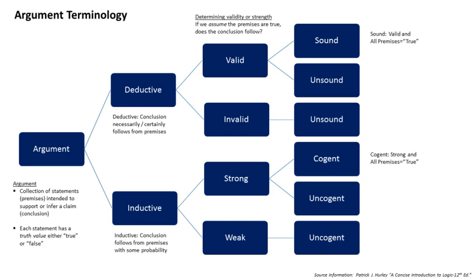Defeasible arguments are based on generalizations that hold only in the majority of cases, but are subject to exceptions and defaults. In order to represent and assess defeasible reasoning, it is necessary to combine the logical rules governing the acceptance of a conclusion based on the acceptance of its premises, with rules of material inference governing how a premise can support a given conclusion. Argumentation schemes have been developed to describe and assess the acceptability or fallaciousness of defeasible arguments. Argumentation schemes are stereotypical patterns of inference, combining semantic-ontological relations with types of reasoning and logical axioms, representing the abstract structure of the most common types of natural arguments. The argumentation schemes provided in Walton, Reed and McCagno (2008) describe tentatively the patterns of the most typical arguments.